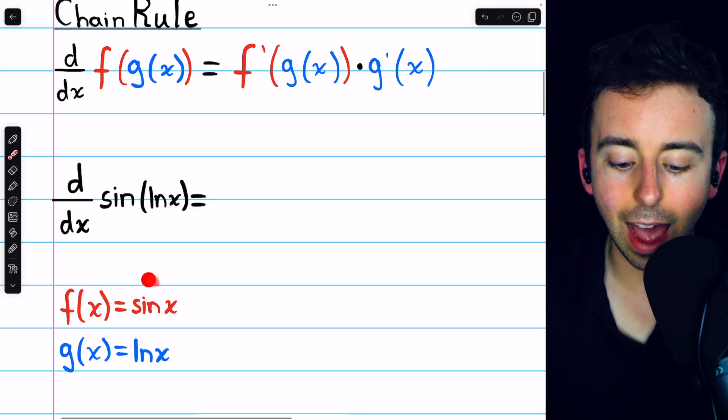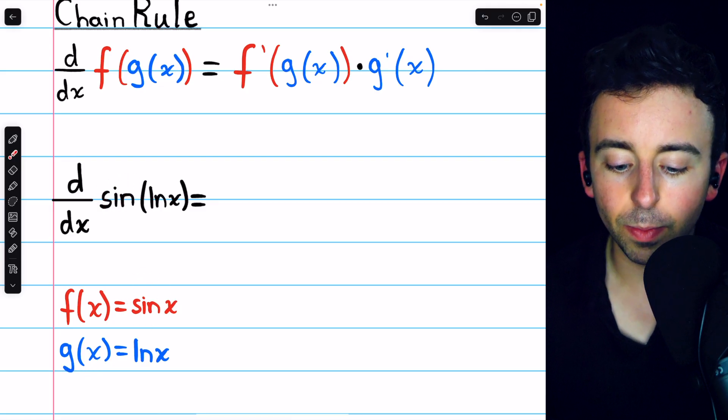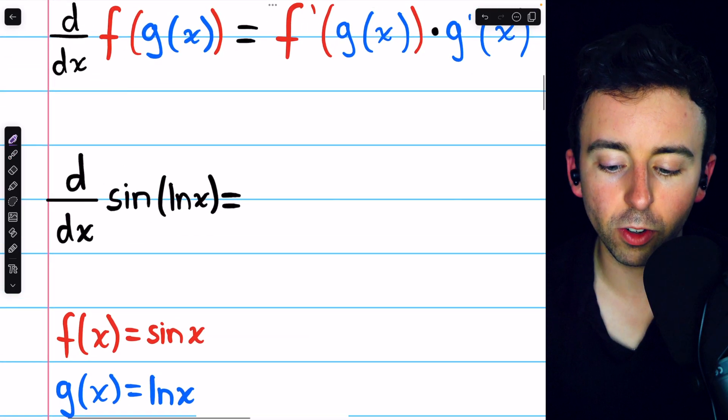In this case, our f, the outside function, is the sine function, and our g, the inside function, is the natural log function.